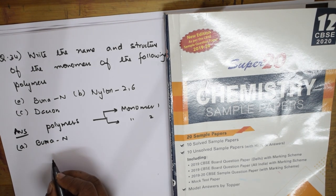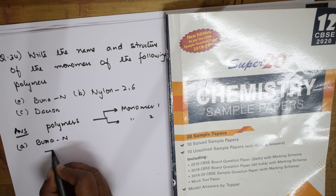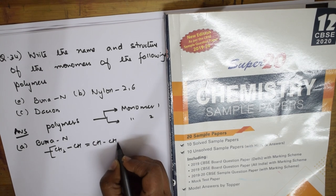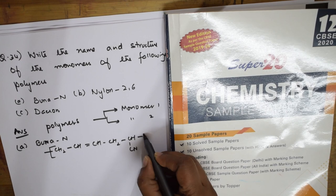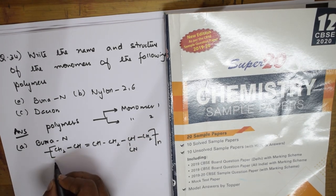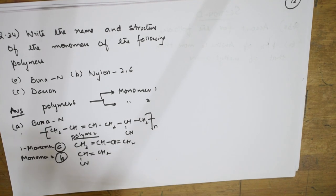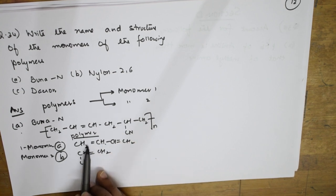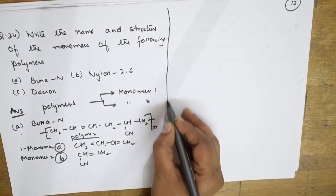When you break Buna-N polymer, you get two monomers: 1,3-butadiene and acrylonitrile. Always remember: from a polymer, identify and write the two monomers clearly. This is the compulsory format for polymer questions in the board exam.